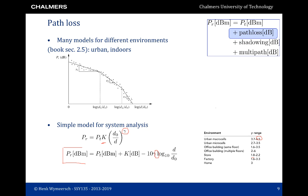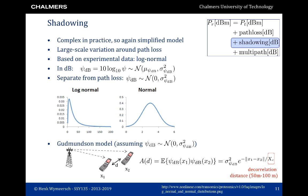Shadowing — the effect due to large objects in the environment — is again very complex, and we use a simple model: a large-scale random variation around the path loss. It turns out from experiment that the log-normal model is quite good. The compound effect of shadowing and path loss in the dB domain can be written as a Gaussian with a mean that depends on the path loss and a certain shadowing variance. If we consider the shadowing separately from path loss, then the shadowing will be zero mean with a variance that depends on the shadowing variance.